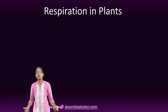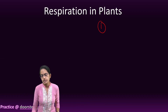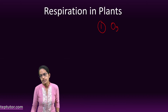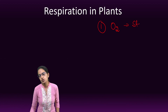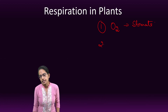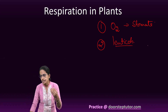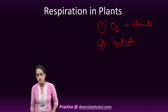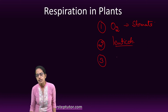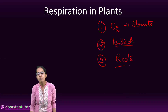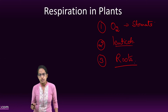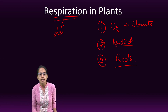How does respiration occur in plants? There are three ways. One is the oxygen which enters through the stomata of the leaf. The second is exchange of gases that occurs through lenticels, which occur in old woody stems. And third, the general surface of the root is another way through which respiration takes place. Respiration is a process that occurs day and night.